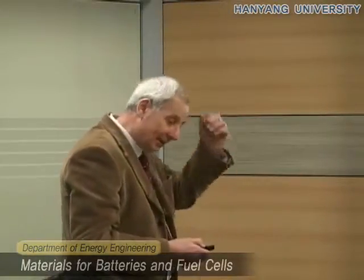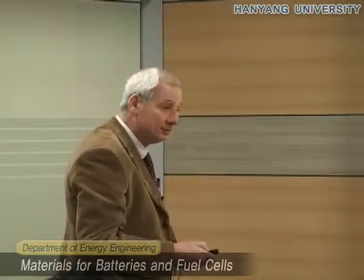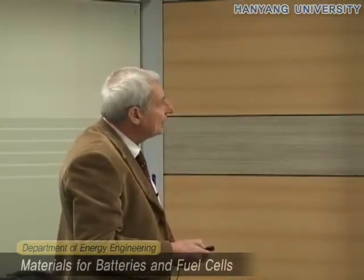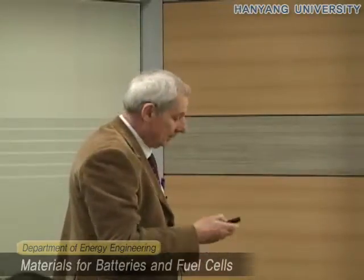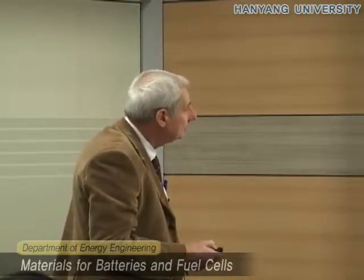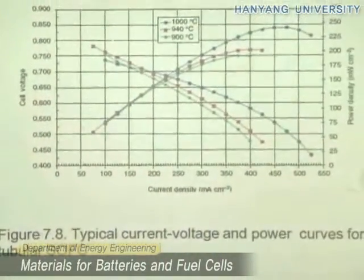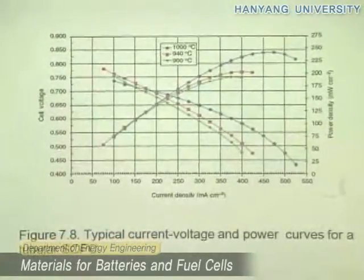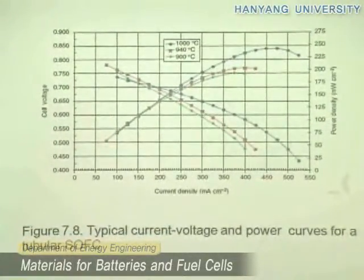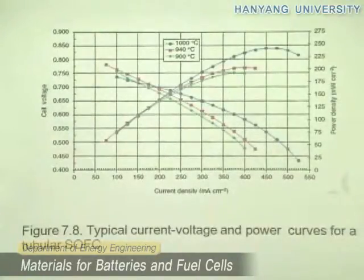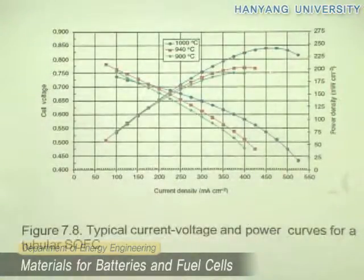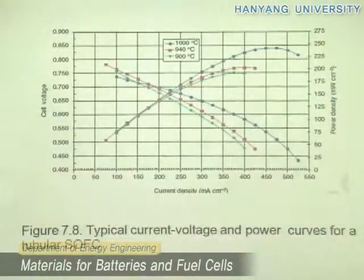It seems like a complicated structure, but it is not that complicated. The main challenge is selecting materials that can withstand very high temperatures. Looking at the current-voltage curves, we have about 800 millivolts and between 500 and 600 milliamps per square centimeter, giving decent power output. As we increase temperature, performance improves because the conductivity of the electrolyte increases.